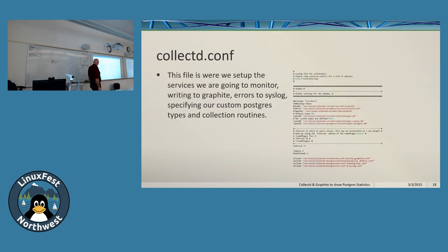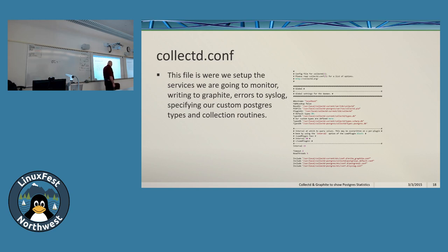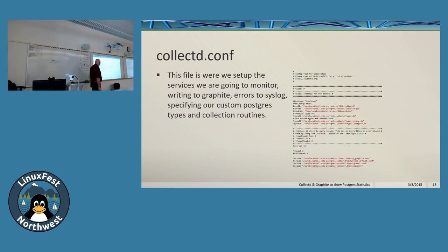In collectd.conf, you tie everything together: include your custom Postgres config, configure write-graphite, and include your types file. You include your basic types, include write-graphite so it can write data out, and you can set how many threads can run simultaneously.